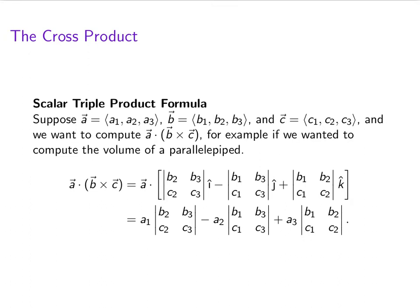Now, if you work all this out, you end up with an expression that looks like this: a1 times the determinant of b2, b3, c2, c3, minus a2 times the determinant of b1, b3, c1, c3, plus a3 times the determinant of b1, b2, c1, c2. Okay, that's kind of a mess.